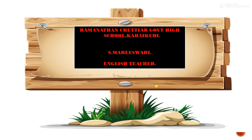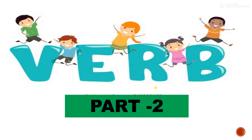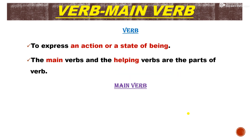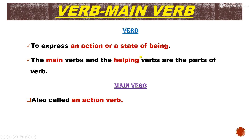Hello students, welcome to the Ladder for Grammar class. Today our topic is verb. In this part two video, we are going to learn what is the main verb and what are the different types. Before getting into this video, we must recall what a verb is. A verb expresses an action or state of being. In verb, there are two parts: main verb and helping verb.